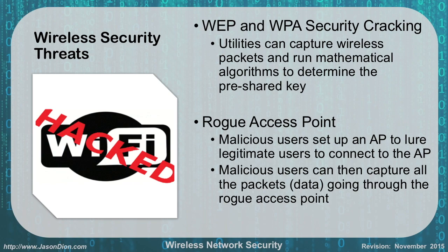Rogue access points are set up by malicious users to lure legitimate users into connecting to their access point, allowing them to capture all packets and data going through it. For example, someone sitting in the back of Starbucks could set up a laptop as a rogue access point labeled 'Starbucks free Wi-Fi.' When you connect, they provide internet access through a cellular modem while capturing all your usernames and passwords. Similarly, at an airport you might connect to something labeled 'BWI free Wi-Fi' and have your banking credentials stolen. Be very careful about wireless in public places.